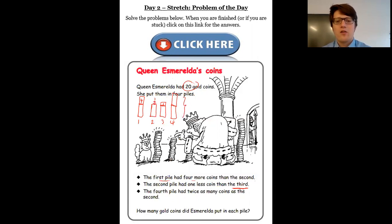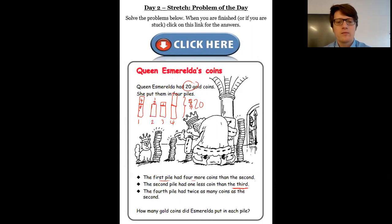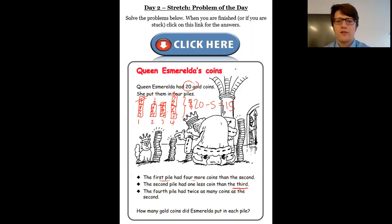Now we know that all of those coins add up to make 20. What I can then do is say, well, I've got four extra and one extra here, but I've actually got one, two, three, four, five parts that are all the same, and then this extra five. So if I get rid of this four and this one by subtracting them — take away four, take away one, so I'm subtracting five — these five equal parts add up to 15.